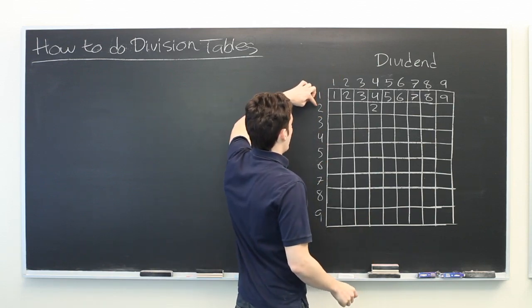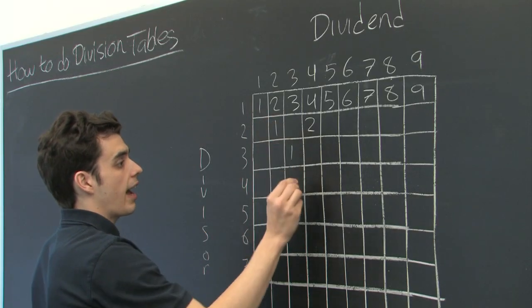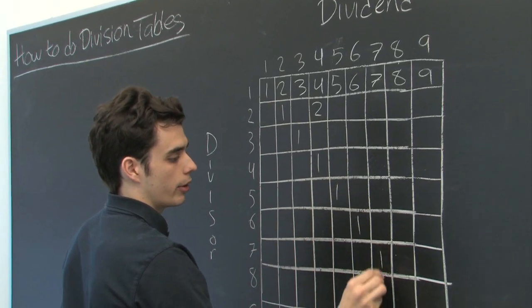Now, any number divided by itself just gives one. So this diagonal can be filled in right away.